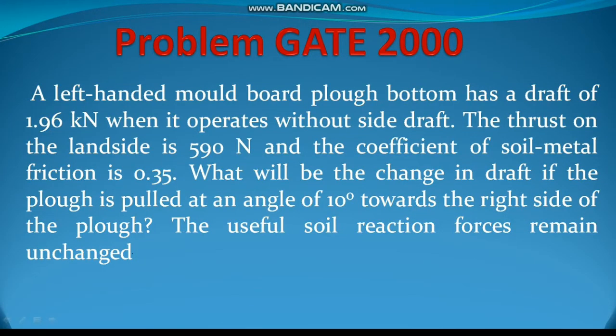Hello students. On the request of one of my students, let us solve a problem from Gate 2000. The problem says a left-handed moldboard plow bottom has a draft of 1.96 kN when it operates without side draft. The thrust on the land side is 590 N and the coefficient of soil-metal friction is 0.35. What will be the change in draft if the plow is pulled at an angle of 10 degrees towards the right side of the plow? The useful soil reaction forces remain unchanged.